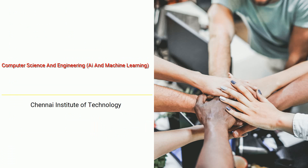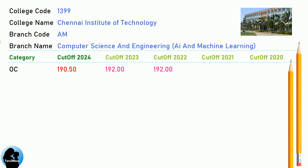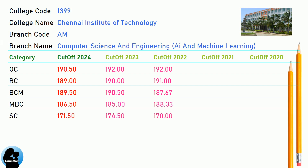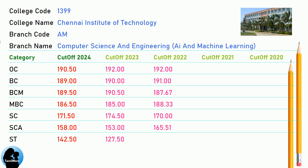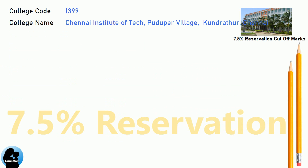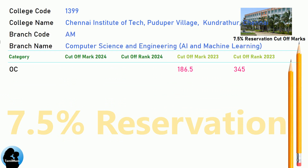DNA Cut-off for Chennai Institute of Technology in Computer Science and Engineering, AI and Machine Learning. DNA 7.5 Reservation Cut-off for Chennai Institute of Technology in Computer Science and Engineering, AI and Machine Learning.